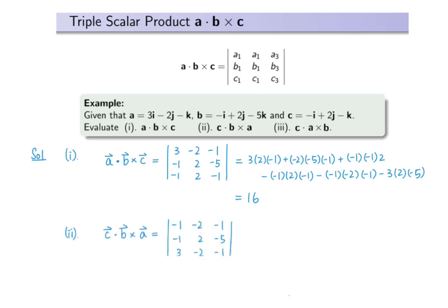Part 2: to compute C dot B cross A, we can also make use of this formula, except that this time we put entries of C in row 1 and entries of A in row 3. We can expand this determinant to get the result. We also know a property from determinants that interchanging any two rows of a determinant gives the negative of the original determinant. Therefore, C dot B cross A is equal to the negative of A dot B cross C, which is negative 16.